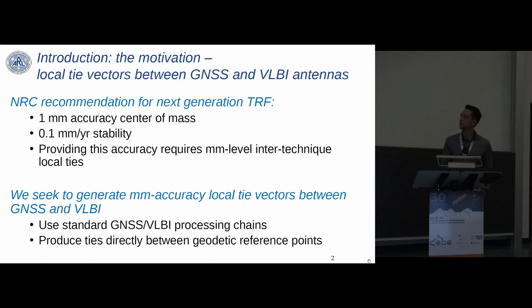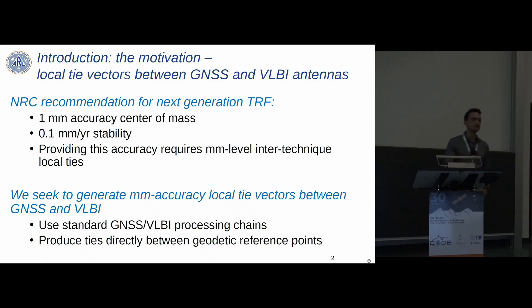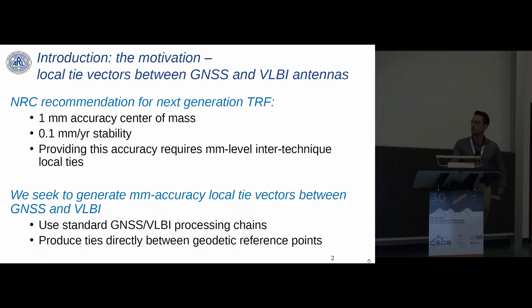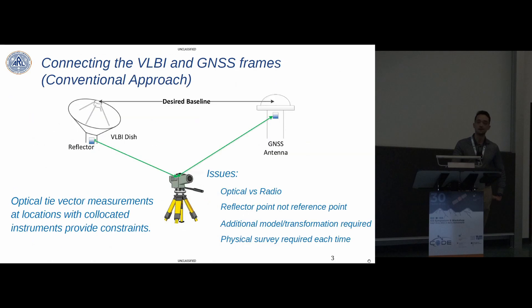Providing the stringent requirements that GGOS and equivalent agencies in the United States have recommended is going to require an abundance of very accurate inter-technique local tie vectors between the space geodetic techniques. We in particular seek to generate these ties between the GNSS and VLBI techniques using standard GNSS and VLBI processing chains, thereby estimating the tie vectors directly between the geodetic reference points.